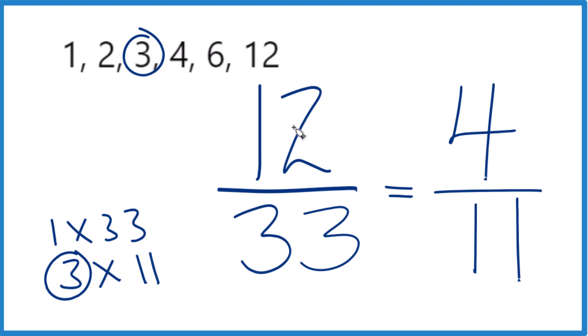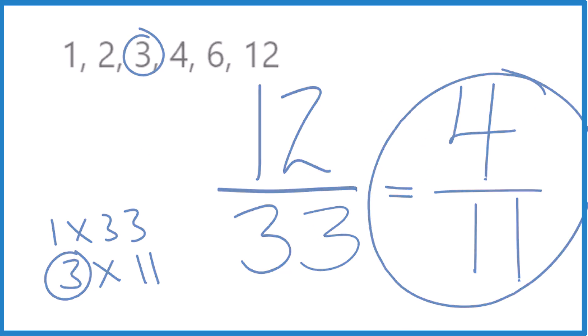So when we simplify the fraction 12/33, we end up with 4/11, and we can't simplify that any further. This is Dr. B simplifying the fraction 12/33. The answer: 4/11. Thanks for watching.